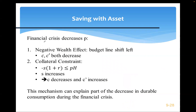To summarize: a financial crisis decreases P (housing prices collapse), causing a negative wealth effect and shifting the budget line left. The collateral constraint becomes tighter, households can borrow less, and C decreases. This mechanism explains part of the decrease in durable consumption during the financial crisis.